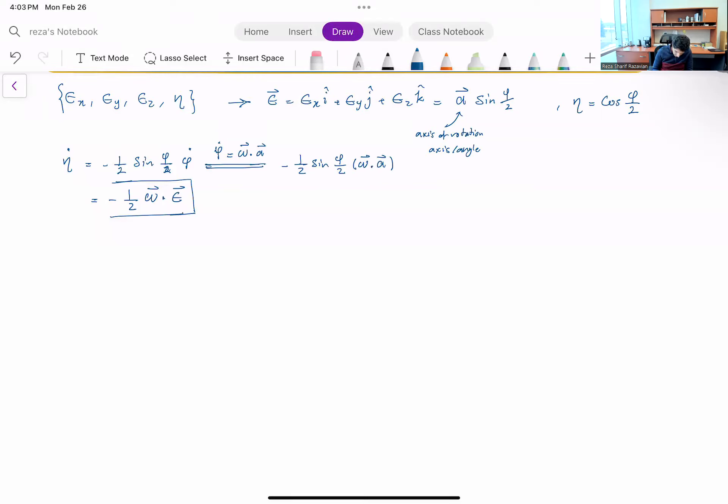Deriving the rate of change of epsilon vector is going to be a bit longer, so you can start by taking derivative of this relation. So what I have is a dot sine of phi over two plus one half a phi dot cosine of phi over two.